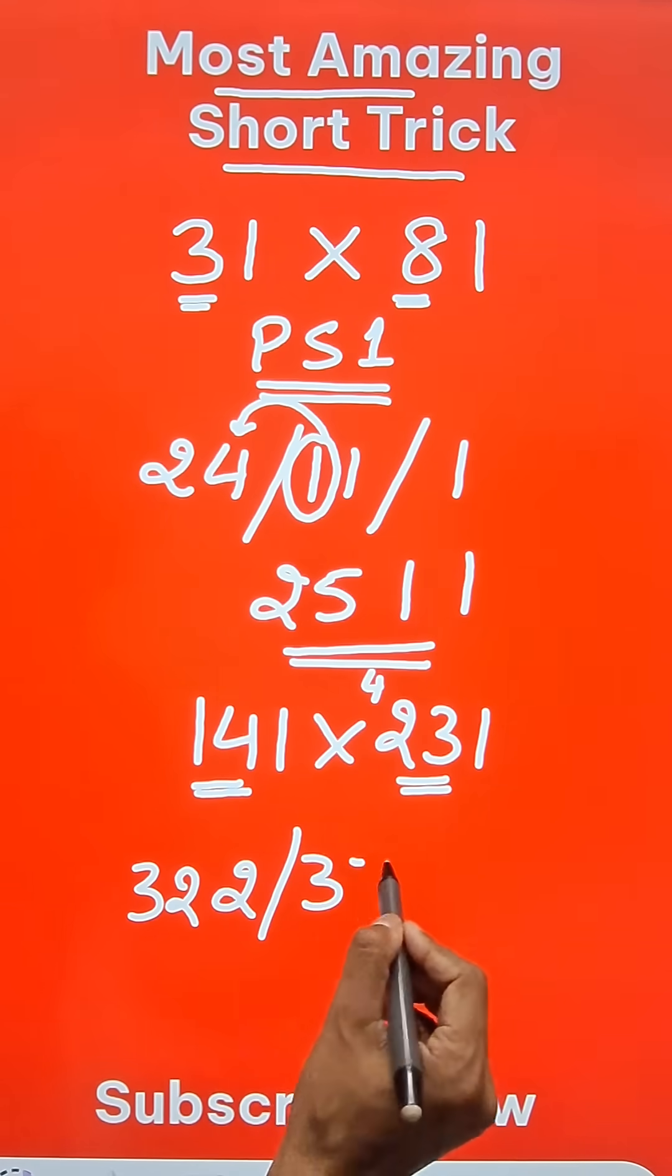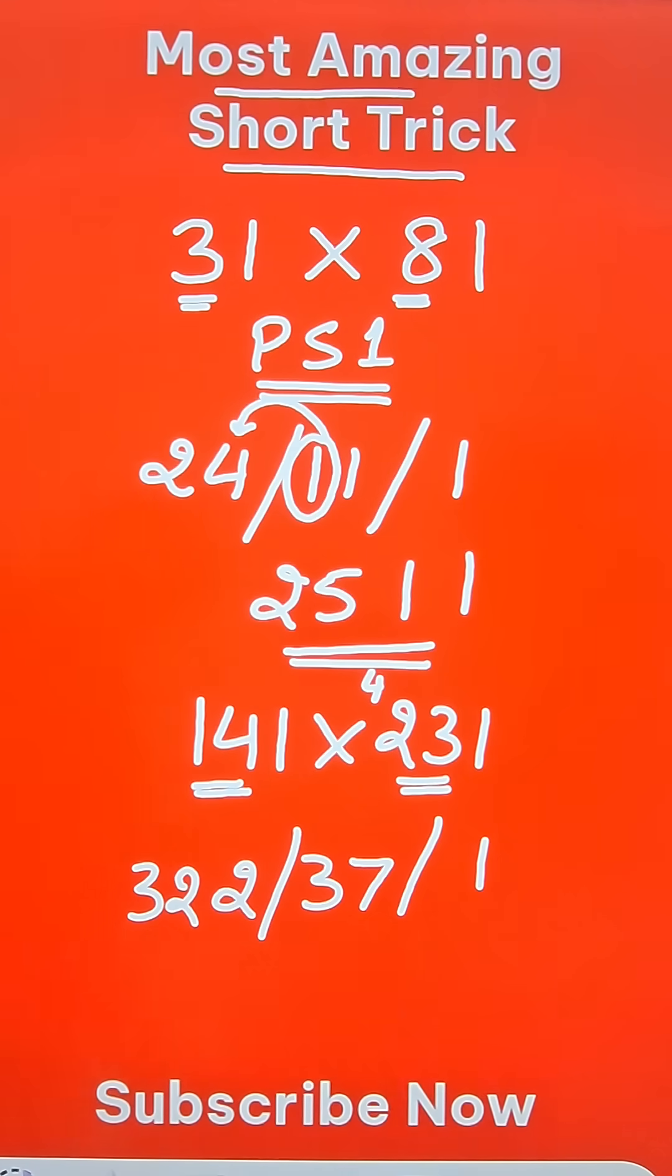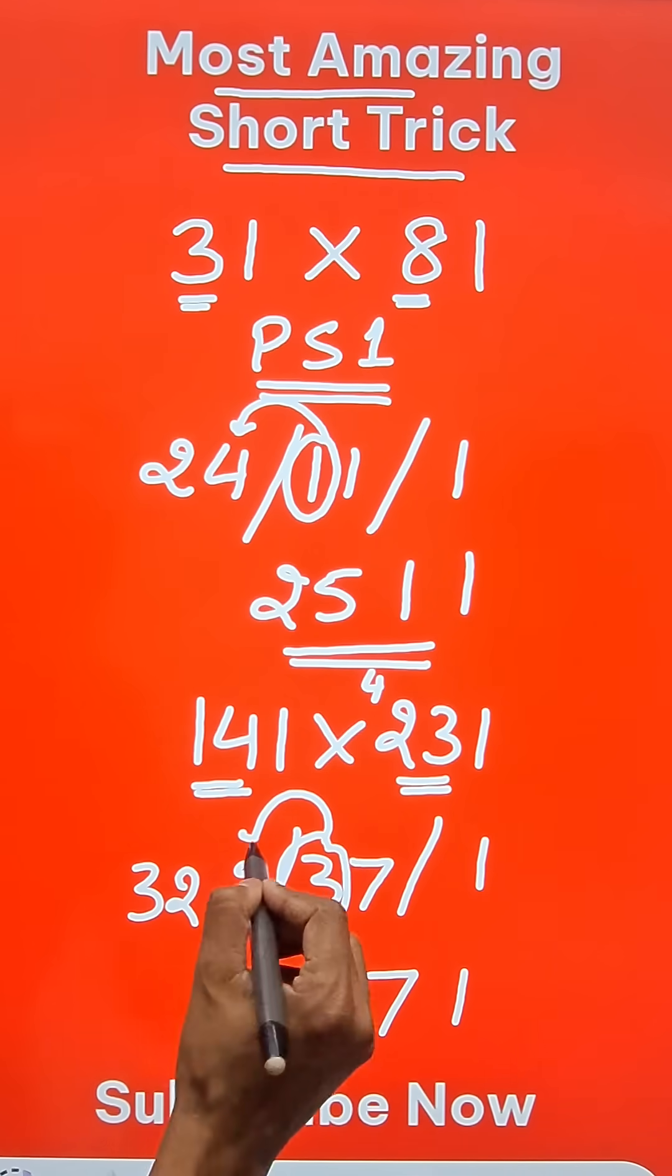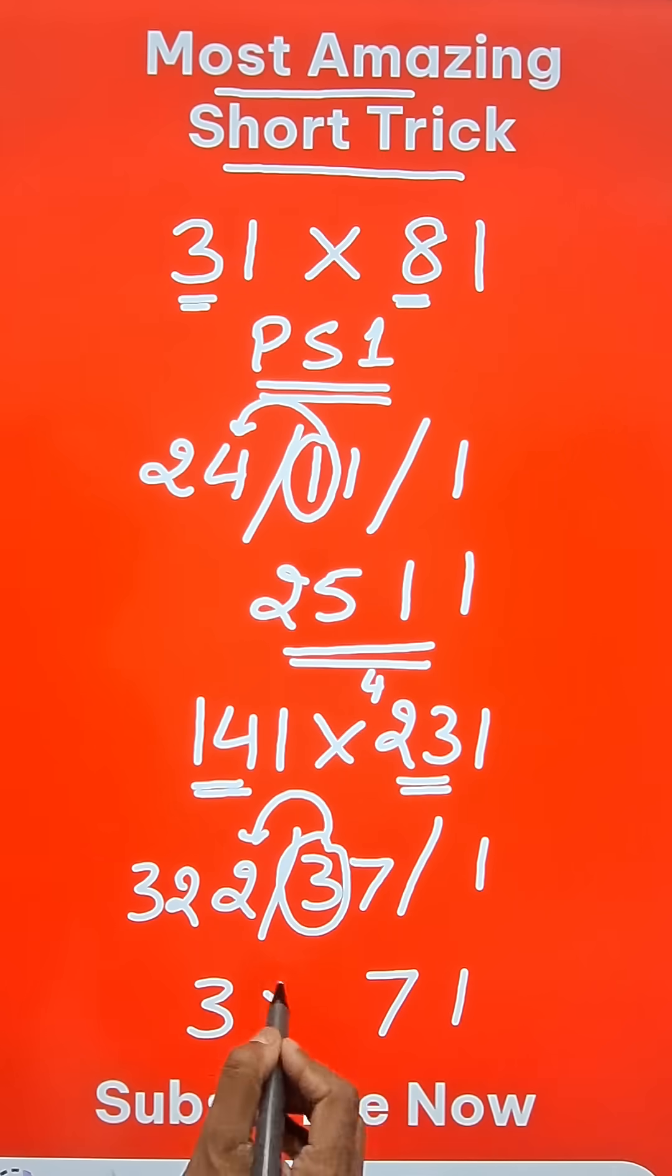Then 14 plus 23 is 37 and finally the 1. Start writing from the unit digit 1, then 7, and the 3 gets carried forward. 22 plus 3 is 25. Here is the product which gives you your final answer.